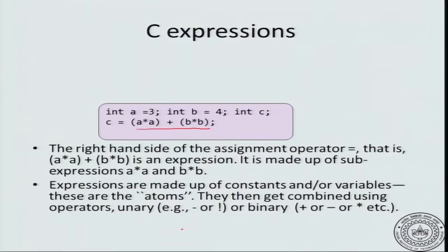Operators can be unary, meaning they take one argument. For example, unary minus: minus 3 is a negative number. Similarly, the not operator that we have seen in connection with logical operations — for example, not of 0. The logical negation operator — both of these operations take one argument.